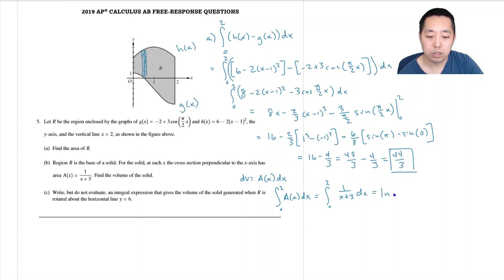That is natural log absolute value of x plus 3 from 0 to 2. That's ln of 5 minus ln of 3. And by log rules, that would be ln of 5 thirds.